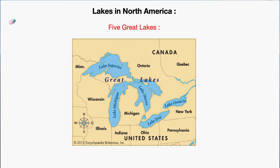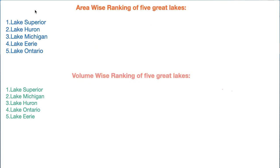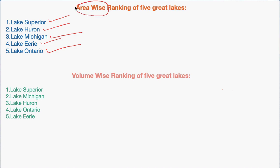Now let's study the lakes of the world together in area-wise ranking. The area-wise ranking of the Five Great Lakes is: Lake Superior, Lake Huron, Lake Michigan, Lake Erie, and Lake Ontario. This is the surface area-wise ranking.